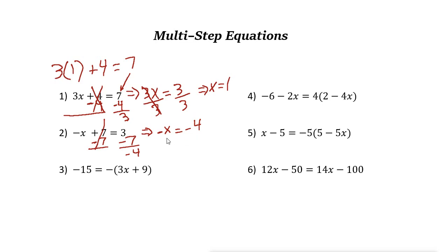What is the next step? We want to find x, not negative x. So divide both sides — or multiply both sides — by negative 1. If you divide or multiply by negative 1, you get the same result. Negative x divided by negative 1 is just x. And negative 4 divided by negative 1 is 4. So x is 4.